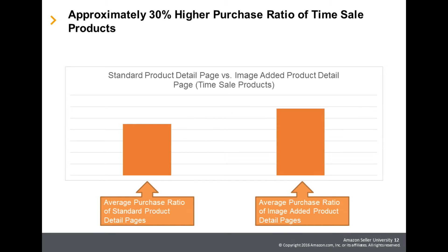This graph compares purchase ratios of products that implemented Rich Product Description with products that did not, within products that executed time sale. Purchase ratio is the ratio of actual purchases to the number of product page visits. Compared to products that did not implement the function, products that did had effects of an approximately 30% higher purchase ratio.